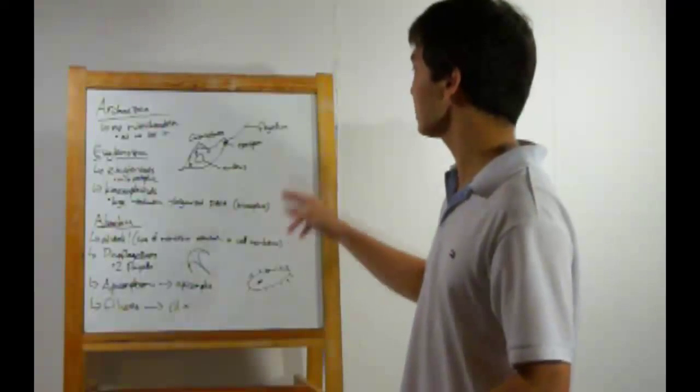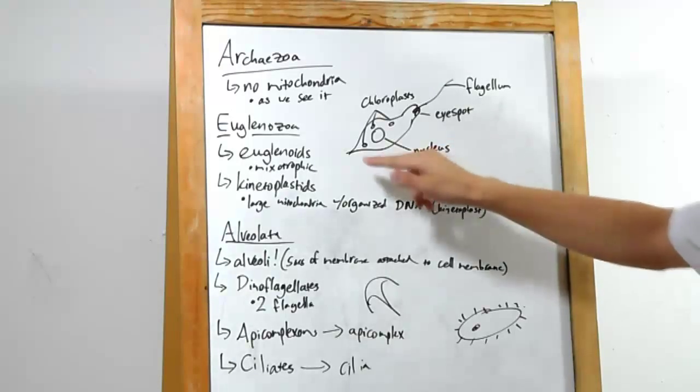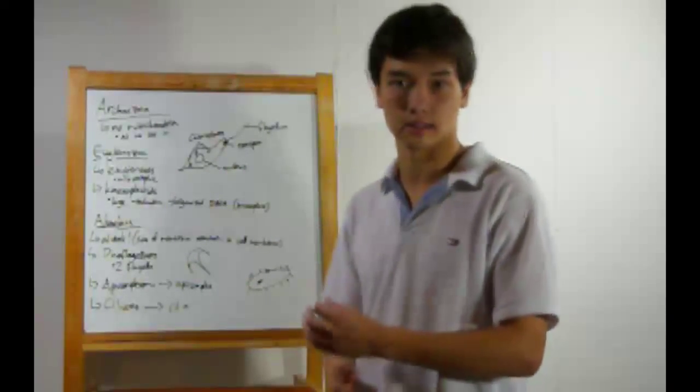Here's a quick diagram of one. Flagellum, which propels it through whatever substance it's in. Eye spot, which helps it guide toward light. And chloroplasts, which will perform photosynthesis. And of course, the nucleus, since these are eukaryotic.